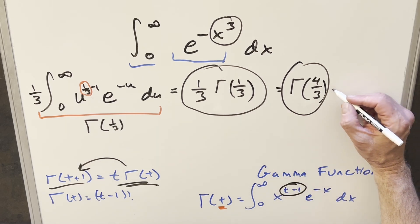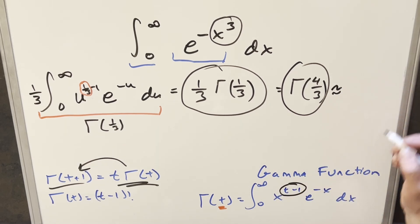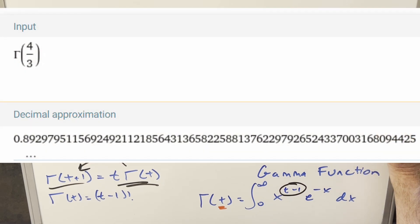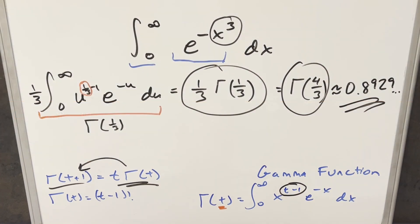I put this in Wolfram Alpha to get an estimate. It gave approximately 0.8929. So yes, this is not quite as nice as the Gaussian integral, not as pretty as √π/2. At least we get the three back everywhere. That's it for today. Thanks everyone for watching. Have a good day.